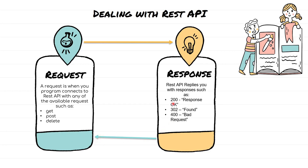The REST API is going to do all the heavy lifting. Whatever code has been written in the REST API takes care of some of the processing and then returns us the processed data. The data we get from REST API can be in one of the available formats such as JSON, XML, or text. Most frequently I have seen JSON or XML, so we need to know how to deal with those in Python.